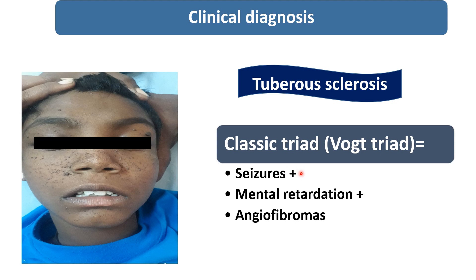Seizures start in the first year of life in 90% of patients. They are also having low IQ and mental retardation. Angiofibroma appears between 4 to 6 years of age and initially may appear as red color nodules, sometimes confused with pimples or acne, and later on becomes brownish in color. So this is the classical Vogt triad of tuberous sclerosis, which was present in our case.